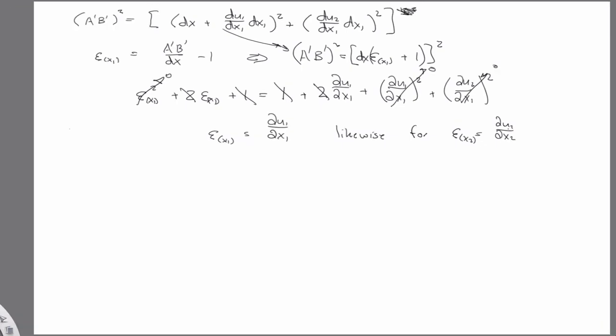So back to that factor of a half. So our definition through the linearization of the Green-Lagrange strain was E equals one-half partial ui partial xj plus partial uj partial xi.